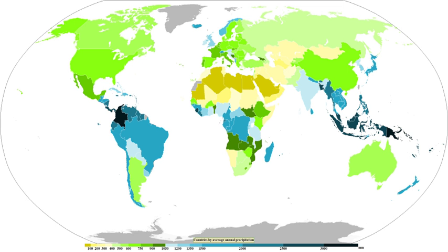Extratropical cyclones can bring cold and dangerous conditions with heavy rain and snow with winds exceeding 119 km per hour, sometimes referred to as windstorms in Europe. The band of precipitation associated with their warm front is often extensive, forced by weak upward vertical motion of air over the frontal boundary which condenses as it cools and produces precipitation within an elongated band that is wide and stratiform, meaning falling out of nimbostratus clouds. When moist air tries to dislodge an Arctic air mass, overrunning snow can result within the poleward side of the elongated precipitation band.